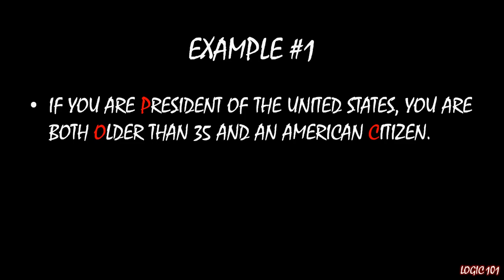Let's go through those one by one, starting with example one: 'If you are President of the United States, you are both older than 35 and an American citizen.' Notice that I've highlighted P, O, and C to represent the three simple sentences in this example. I'd like you to pause and write how you would translate this into logical notation in the comments section. This one is straightforward because it's an IF/THEN expression.